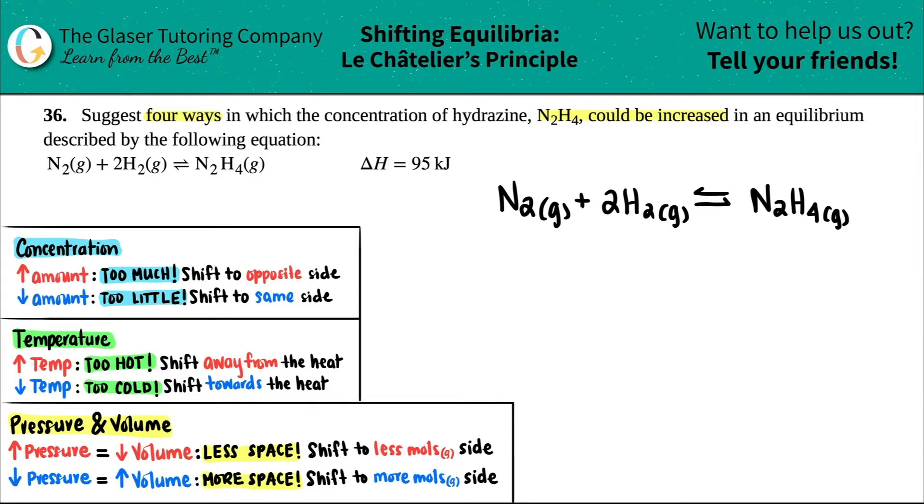Now the first thing that I do, whenever they're talking about equilibrium and changing concentrations, welcome to Le Chatelier's principle. This is Le Chatelier's principle in a nutshell. So we're going to run through the whole thing. But the first thing that I would suggest is don't worry about the number that they gave you for the delta H. Just put this in terms of the heat. Remember, delta H is a heat value.